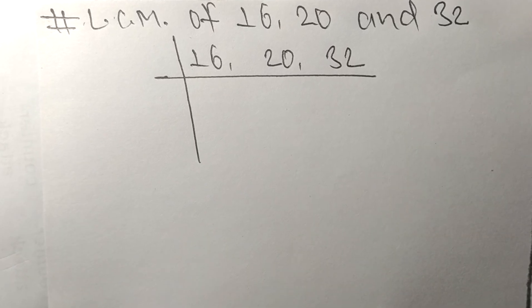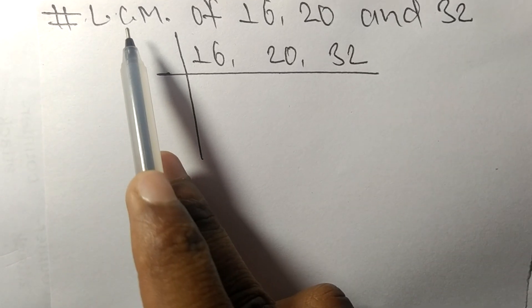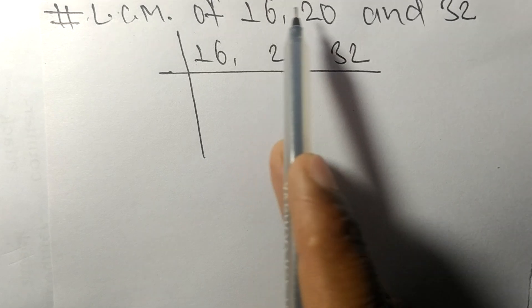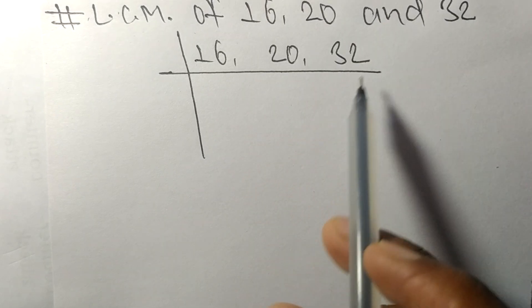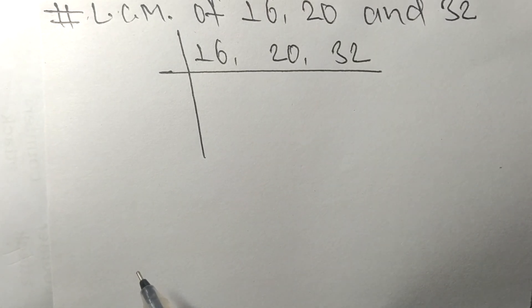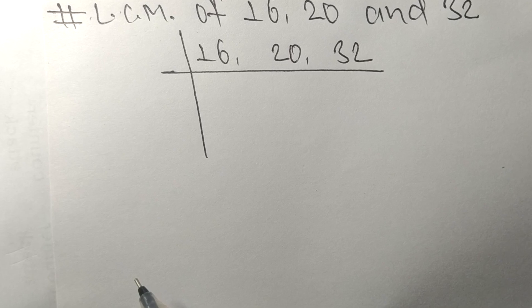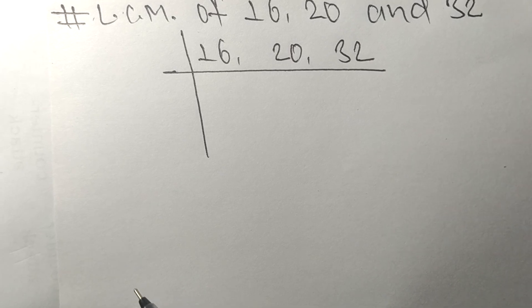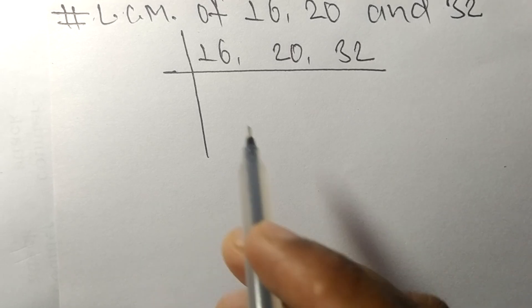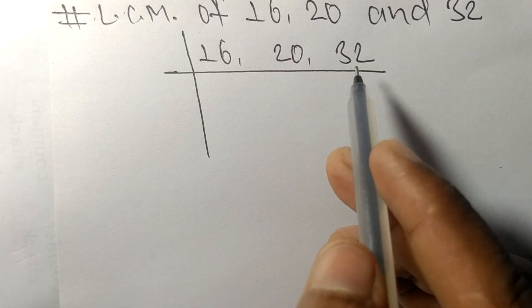So today in this video we shall learn to find the LCM of 16, 20, and 32. To find LCM, we have to choose the lowest number that can exactly divide at least any two of these numbers.